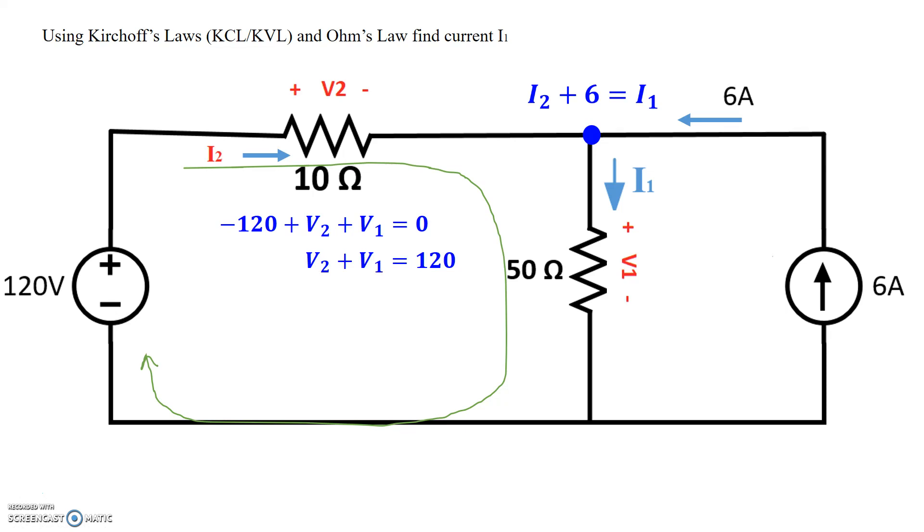So I've used Kirchhoff's current law at this node, Kirchhoff's voltage law to walk around this loop right here. Now let's use Ohm's law. Ohm's law says the voltage across a resistive element is equal to the current through that element times this resistance.